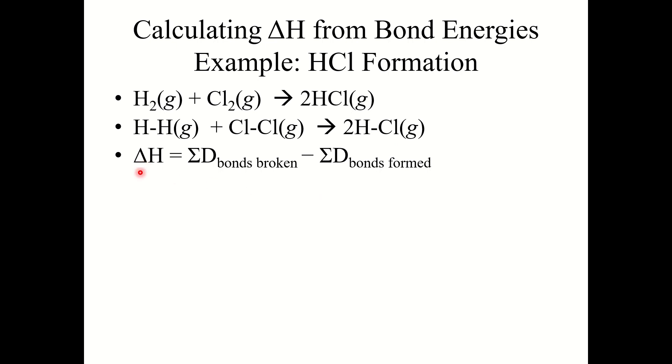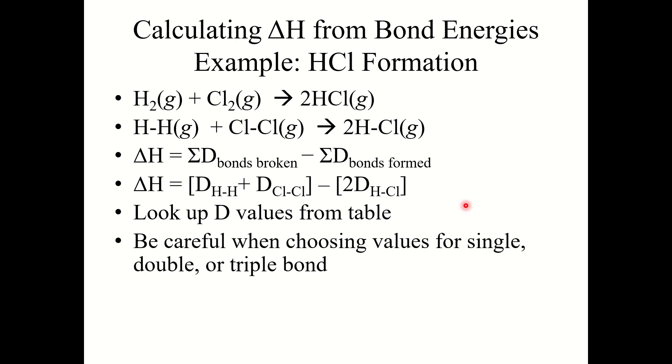Delta H equals the bonds broken minus the bonds formed. This would be the bond energy of the H–H bond plus the bond energy of the Cl–Cl bond minus 2 times the bond energy of the H–Cl bonds. You look up these values from the table. Make sure you're paying attention and choose carefully because there will be single, double, and triple bonds all present. Here we have all single bonds.